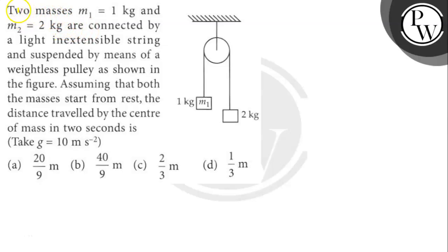Hello, let's read the question. The question says here, two masses M1 equals 1 kg and M2 equals 2 kg are connected by a light, inextensible string and suspended by means of a weightless pulley as shown in the figure.